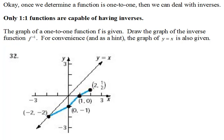In the last video we talked about what it means for a function to be 1-to-1. We saw that it passes both the vertical and the horizontal line test. It's only in that case that we can deal with inverses. Notice here — only 1-to-1 functions are capable of having inverses.